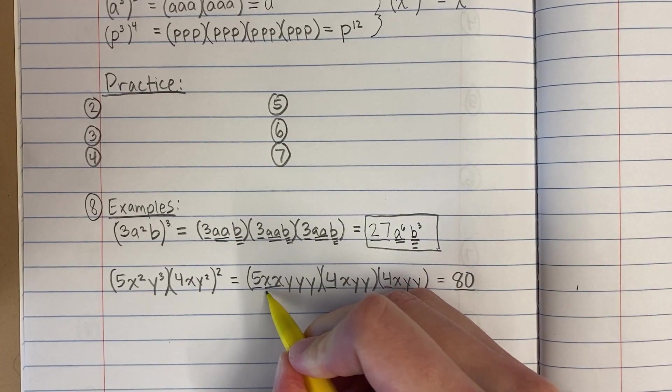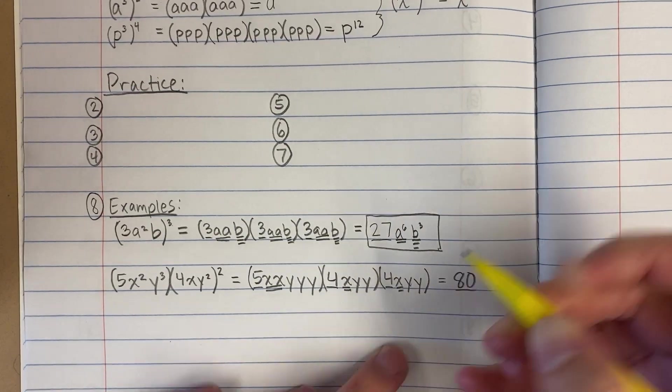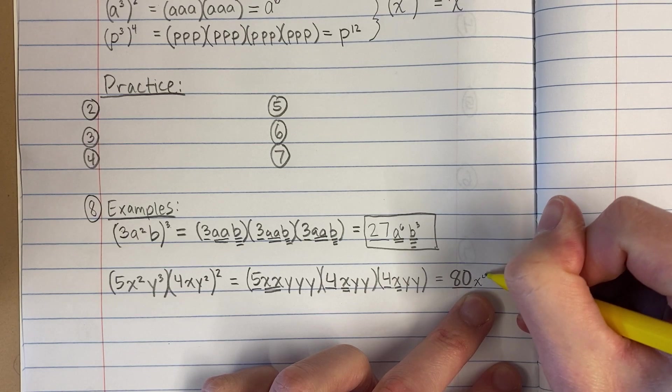Now I'm going to count the x's. 1, 2, 3, 4 x's. x to the 4th.